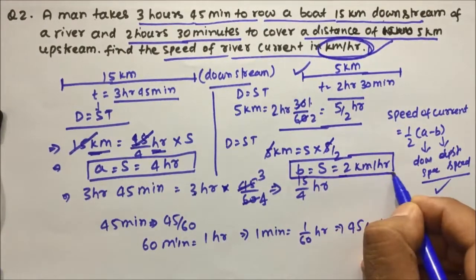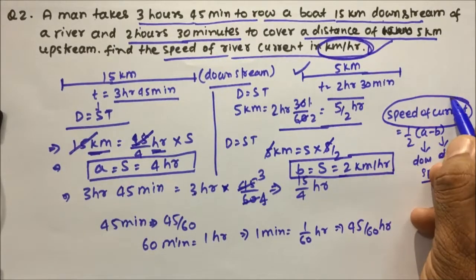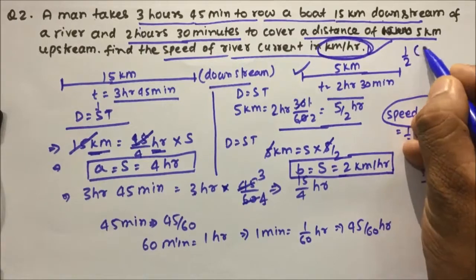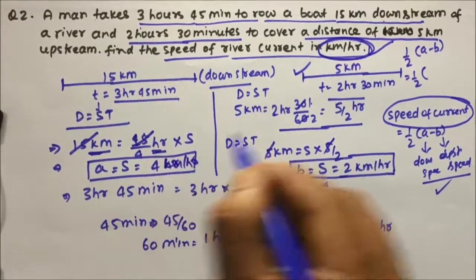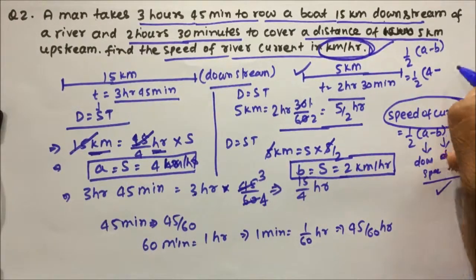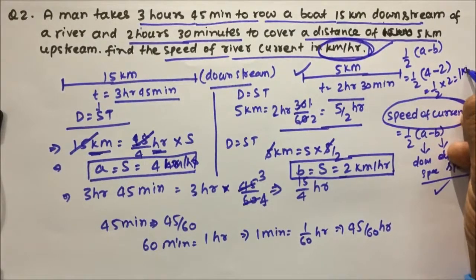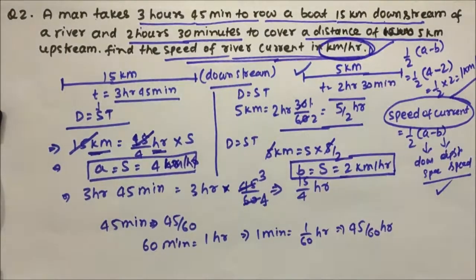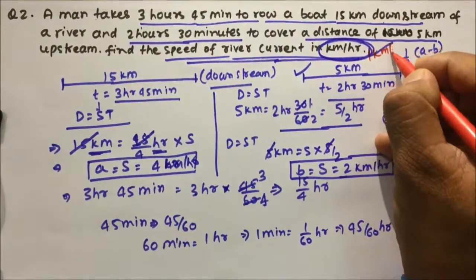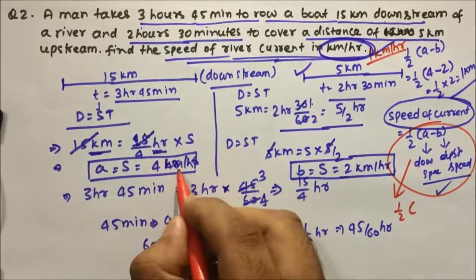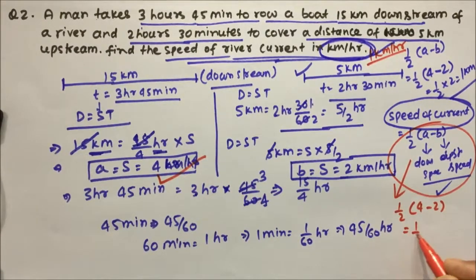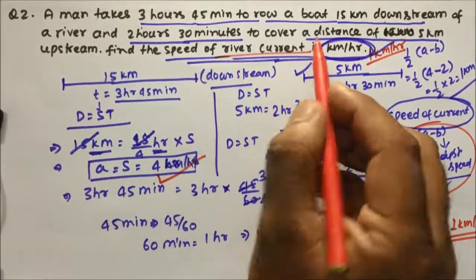Now we calculate speed of the current: 1/2 × (A − B) = 1/2 × (4 − 2) = 1/2 × 2 = 1 km per hour. So the answer is 1 km per hour, which is the speed of the river or speed of the current. It is very easy to use this formula once you get the values of A and B.